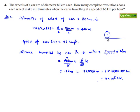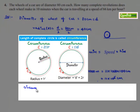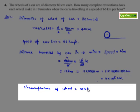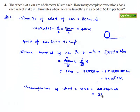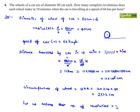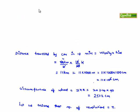In order to find the number of revolutions made by the wheel, we need the circumference of the wheel. Therefore, the circumference of the wheel will be equal to 2πr, which is nothing but 2 times 3.14 times 40, that is equal to 251.2 cm. Let us assume that the number of revolutions made by the wheel is equal to n. Then the distance travelled will be equal to n times the circumference of the wheel.